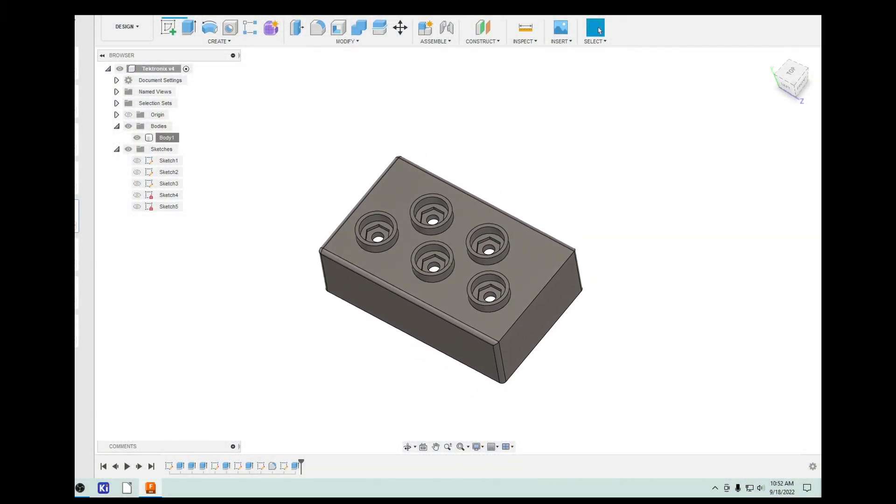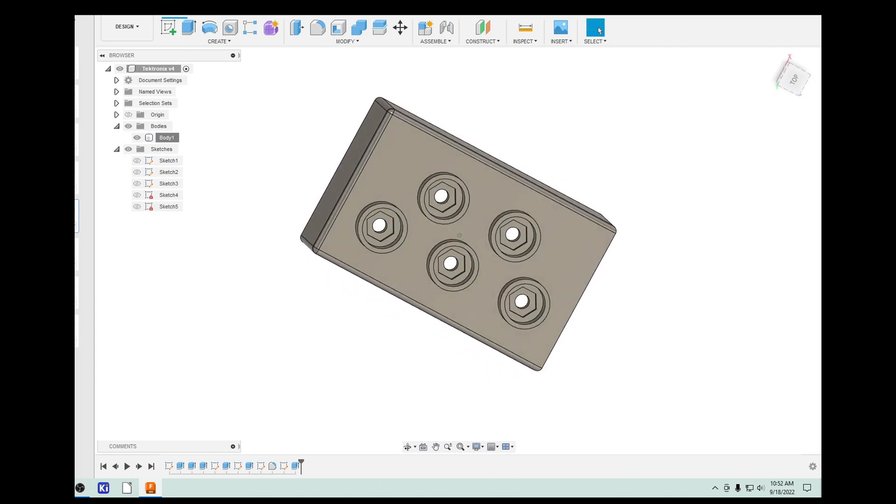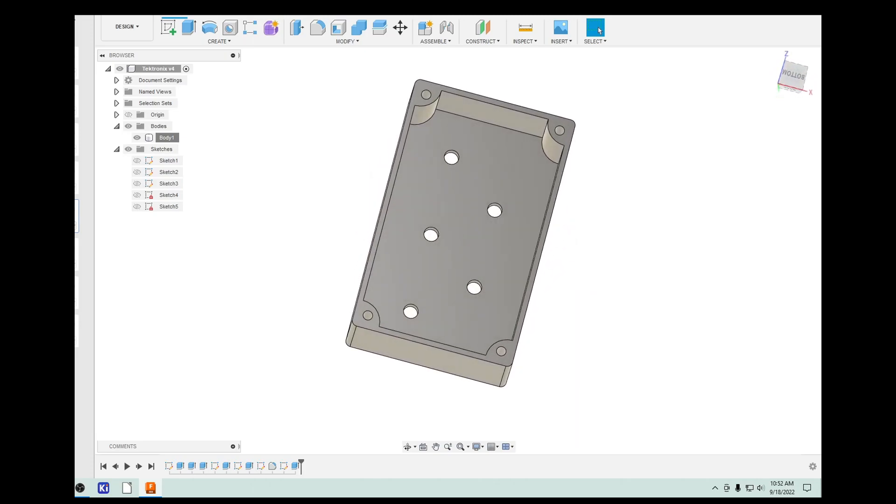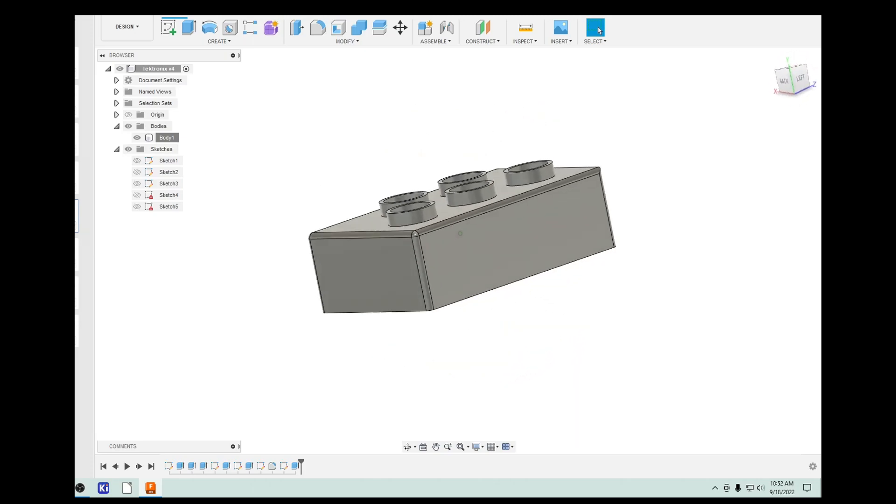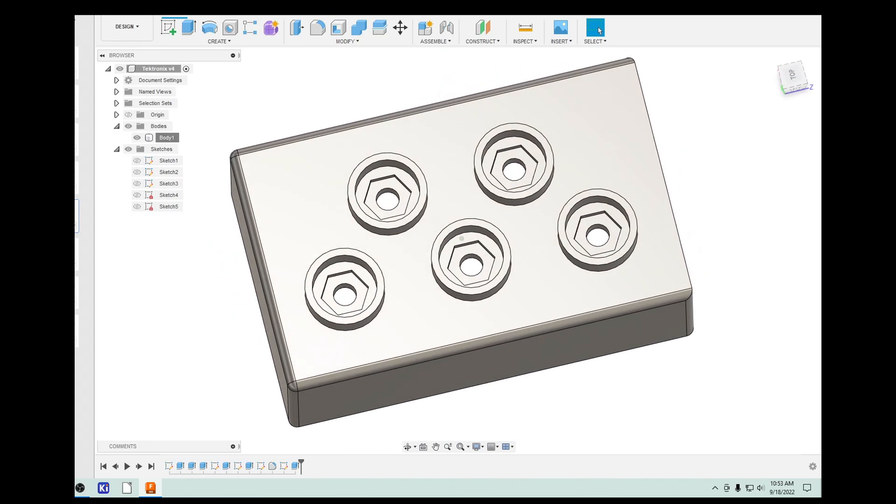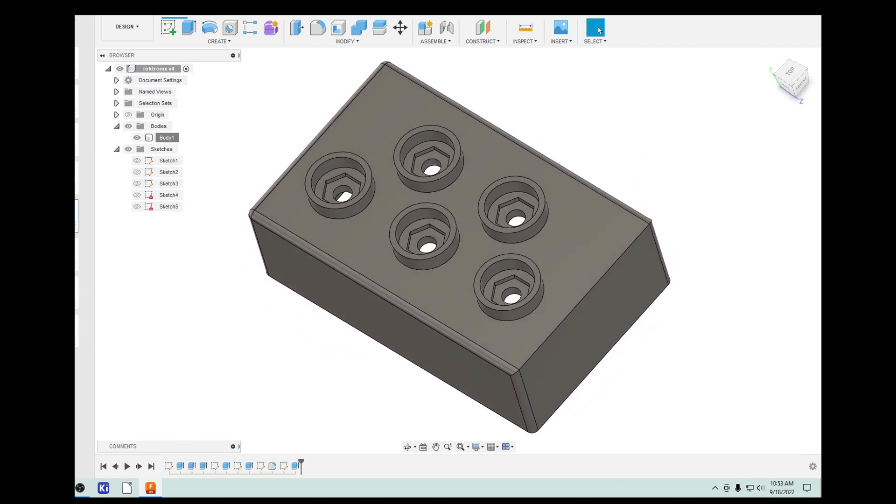So I'm going to design a package here for the Tektronix Curve Tracer. This is a part that will hold a PC board on this side, and then banana jacks will be on this side.